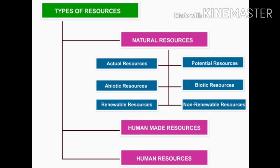Next, we have natural resources classified on the basis of stock, like Renewable Resources. Renewable resources are resources that are currently available, are constantly generated by natural processes, and can also be renewed by physical, mechanical, or chemical processes. Some resources are unlimited, such as solar or wind energy.